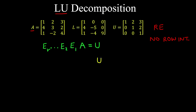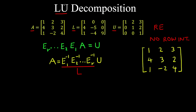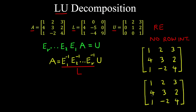Given that elementary matrices are invertible, we can recover A by multiplying U by the inverse of ER, and so on, then by the inverse of E2, and by the inverse of E1. So that gives back A. Therefore, this product of inverses is our lower triangular matrix L. So let's find this LU decomposition by reducing A to row echelon form, tracking our computations by writing A and a copy alongside it.